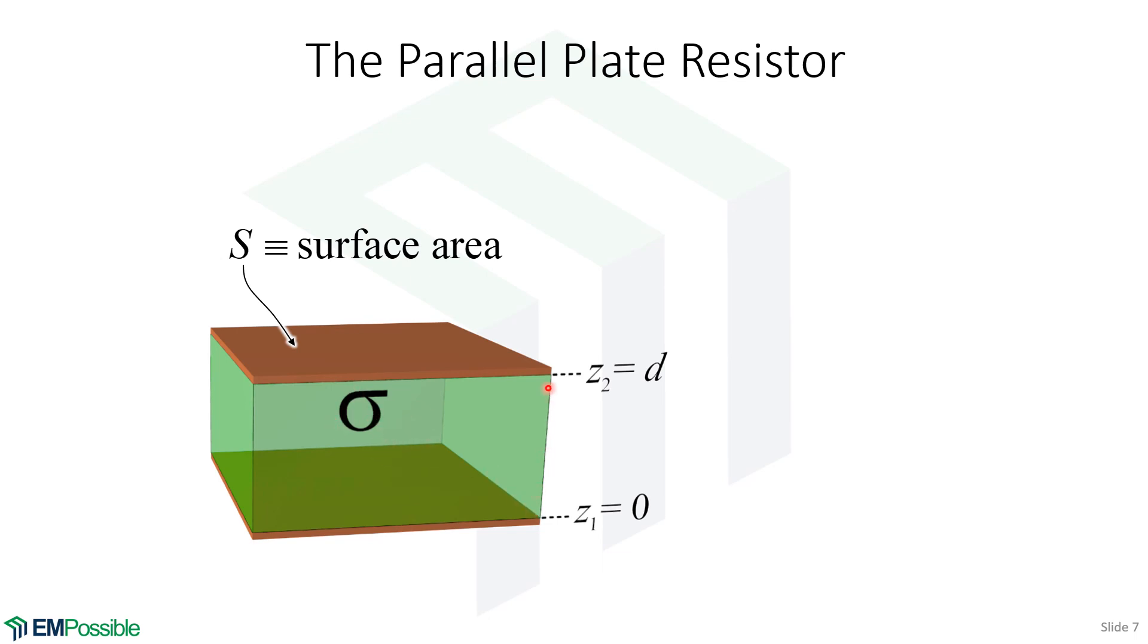And it has a gap distance of D and a surface area of S in the cross-section. Well, the resistance of this is the length of the resistor D divided by the conductivity sigma and also divided by the cross-sectional surface area S.